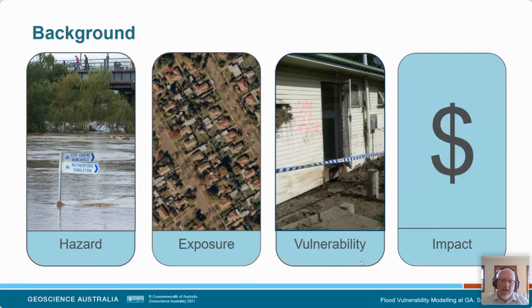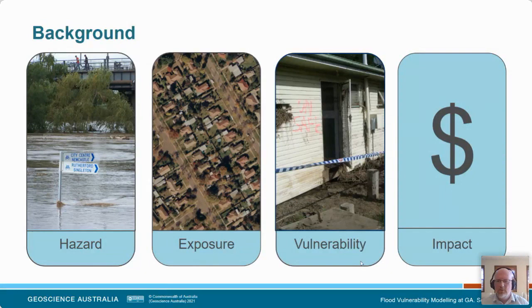Our standard workflow for natural hazard impact assessments starts with hazards — in this case, water where it shouldn't be, essentially floodwaters. We have assets that are exposed to that hazard, such as residential buildings, communities in general, or critical infrastructure. Those exposed assets and people have a vulnerability to that type of hazard — it's pretty clear that buildings are vulnerable to floodwater. We have a variety of impact metrics: a dollar figure means the most to people and policymakers, but we can also look at the number of properties inundated, whether people are displaced, and whether there are injuries and fatalities.